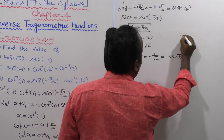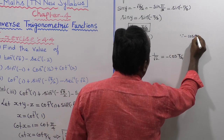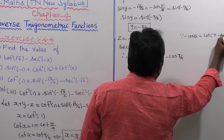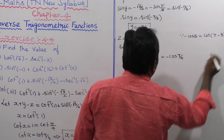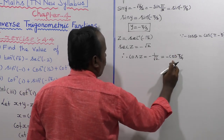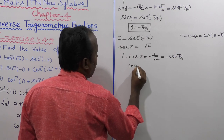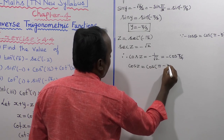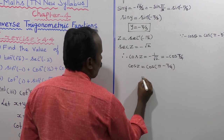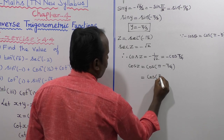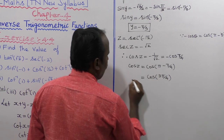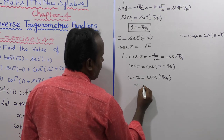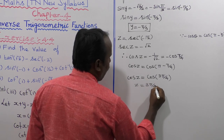Using the formula minus cos theta equals cos of pi minus theta, we get cos z equal to cos of pi minus pi by 4, which is cos of 3 pi by 4. So cos cancels and z is equal to 3 pi by 4.